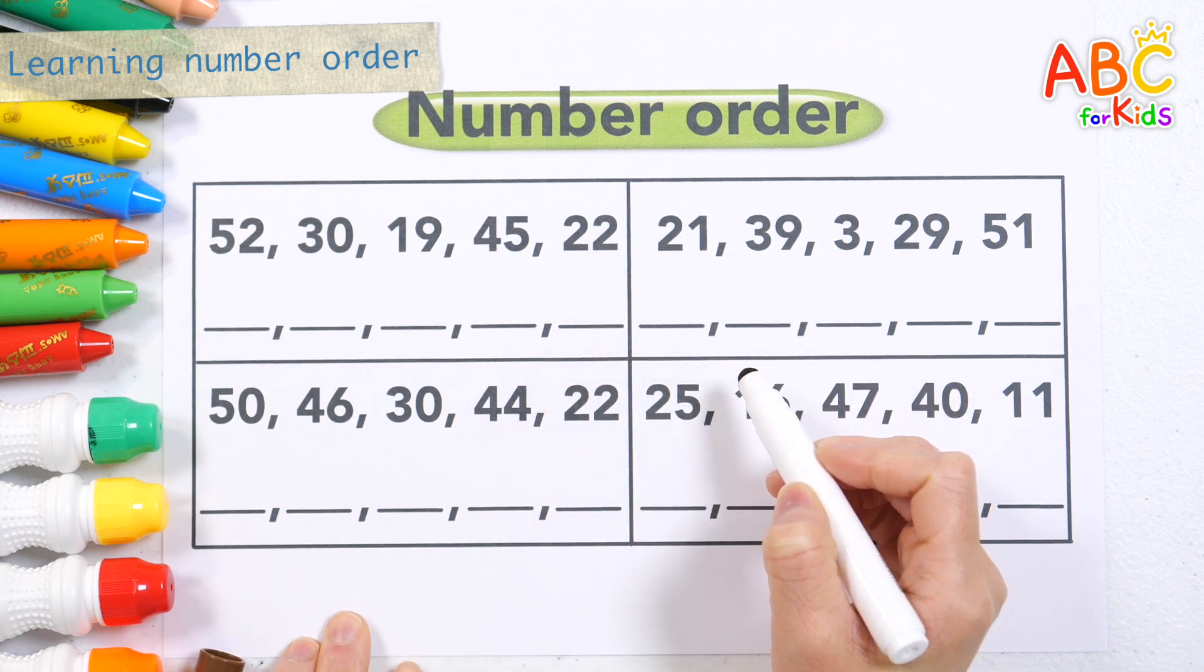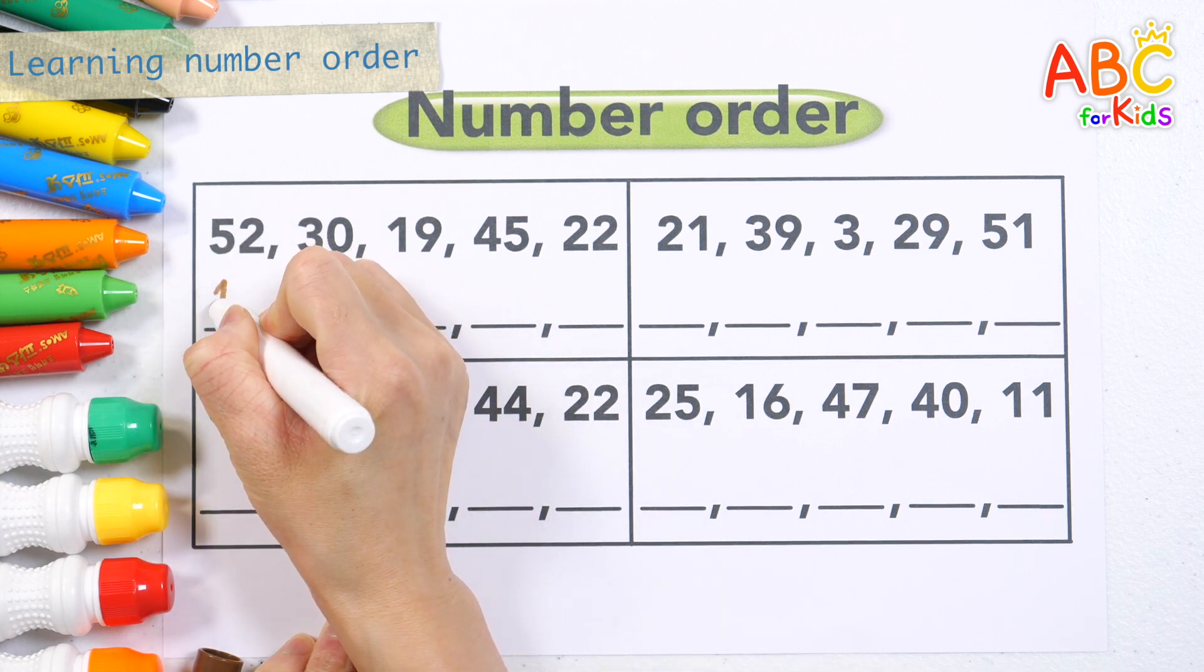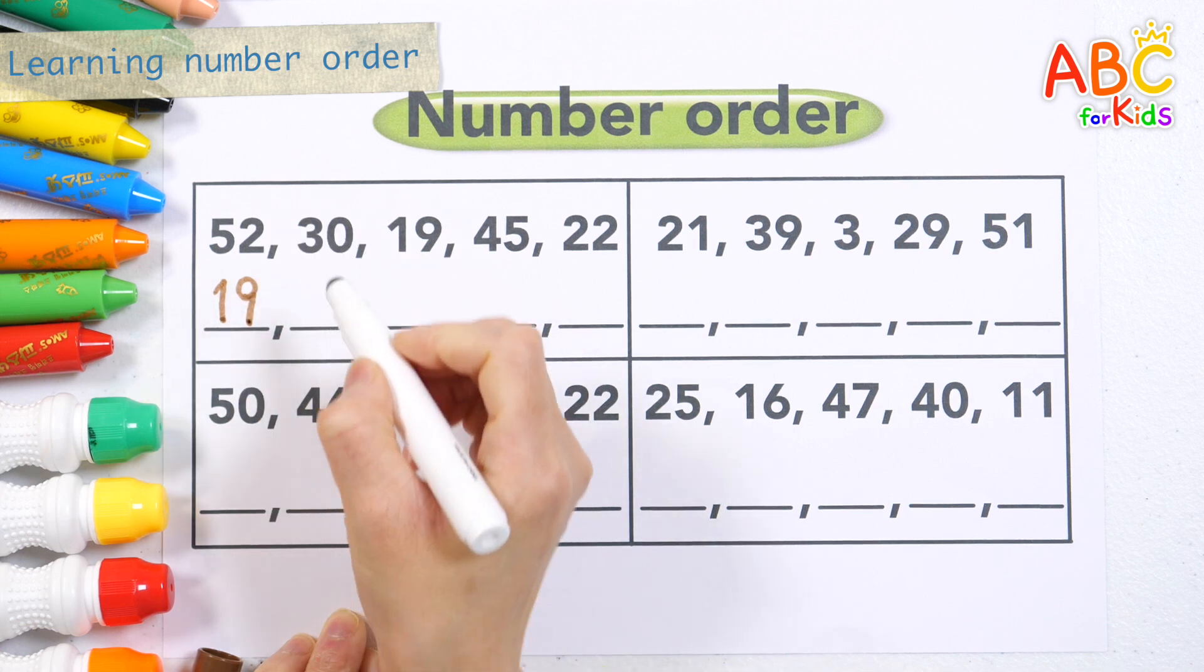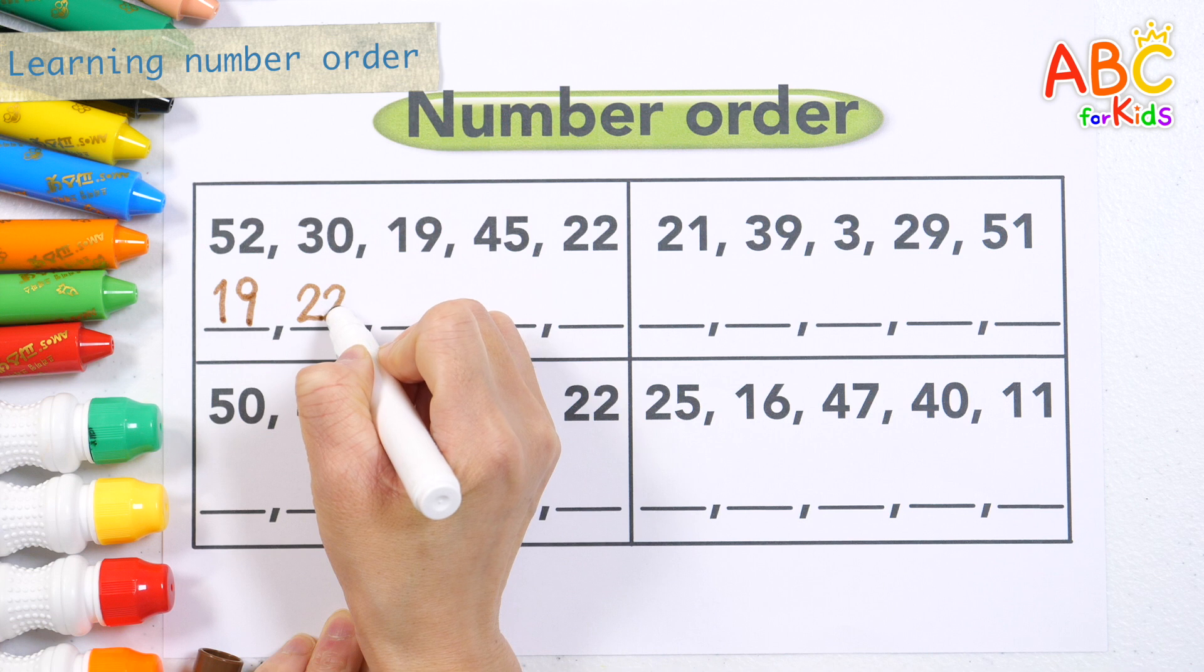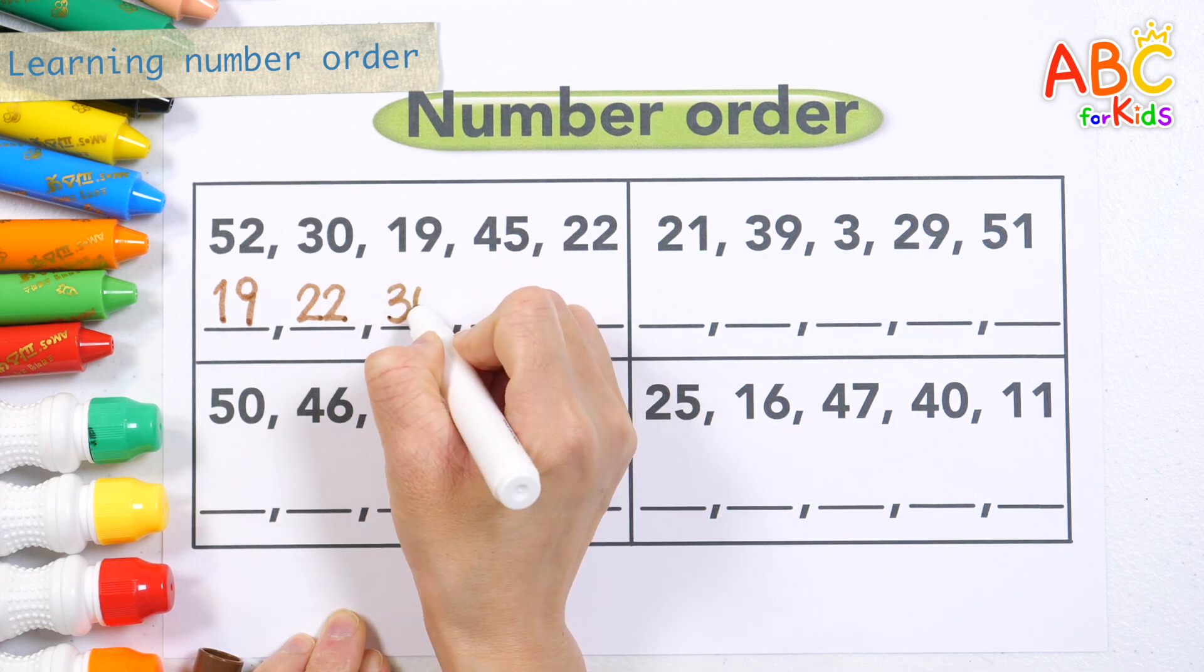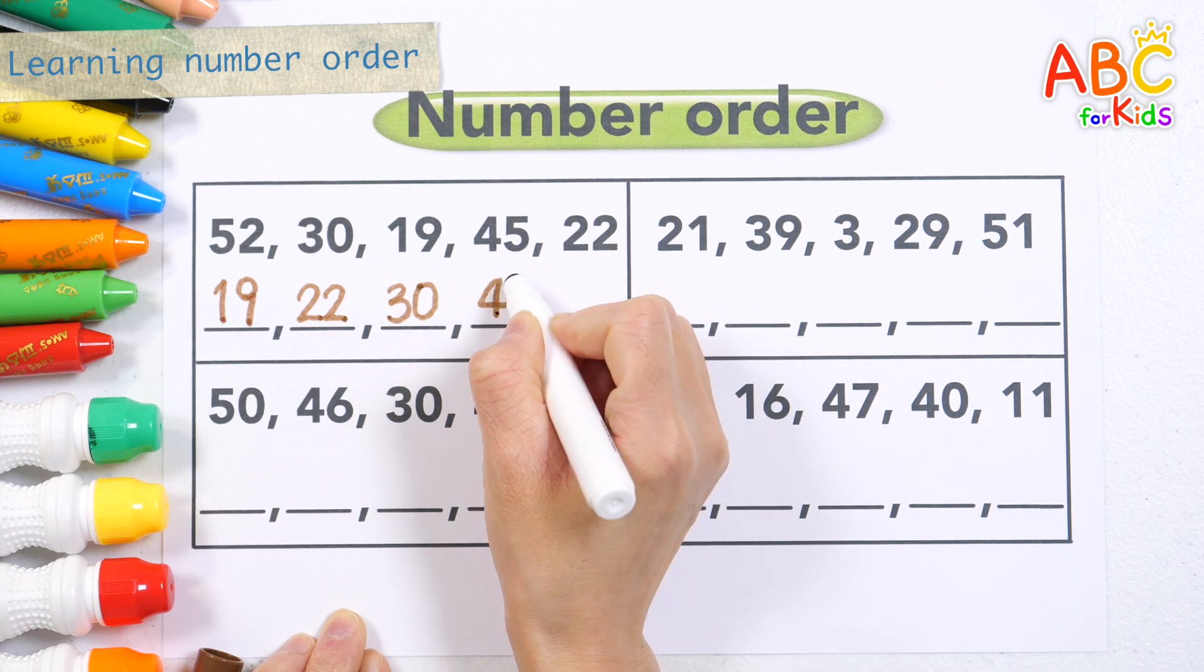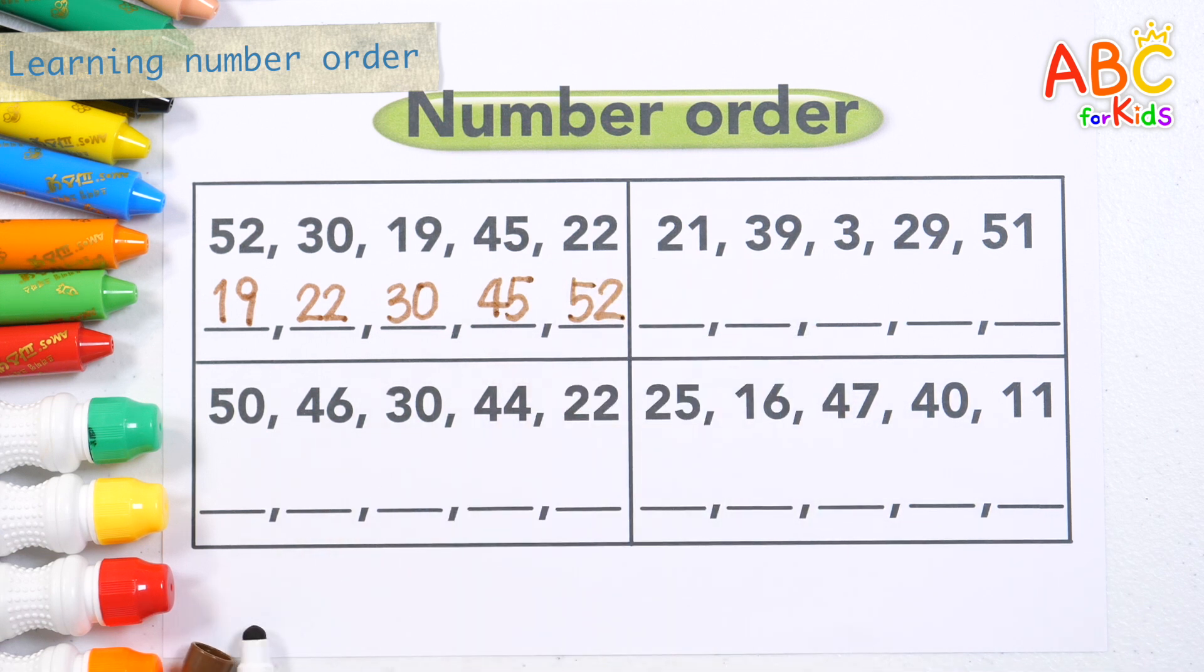Let's write the numbers in order from smallest to largest. 19, 22, 30, 45, 52. Good job!